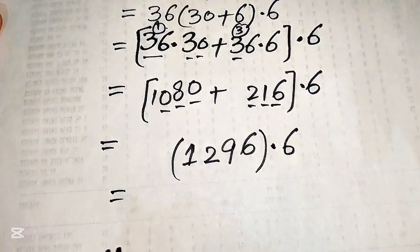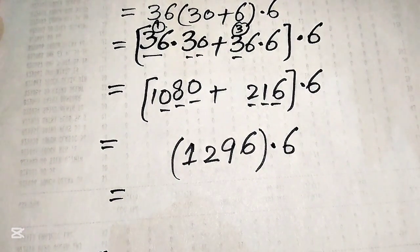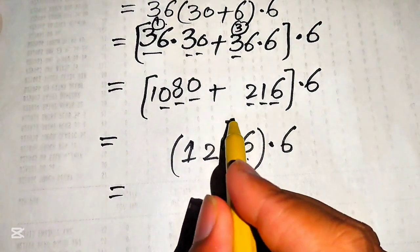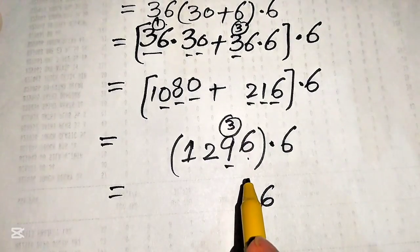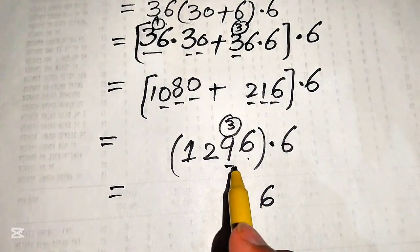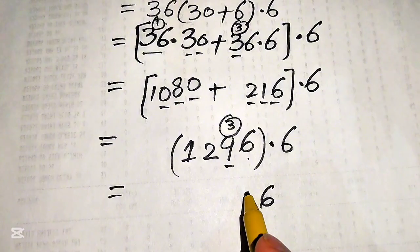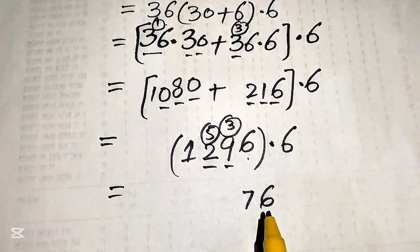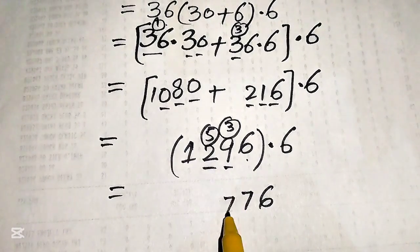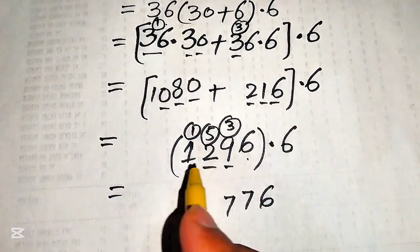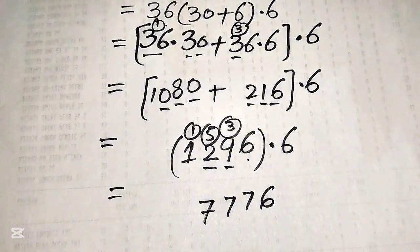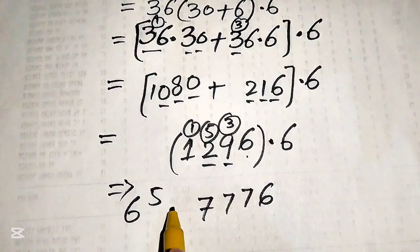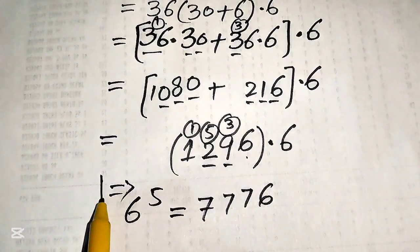We can multiply these two numbers directly in our mind without using the calculator. 6 times 6 becomes 36, write 6 carry 3; 6 and 9 are 54, plus 3 becomes 57, write 7 carry 5; 6 times 2 is 12, plus 5 becomes 17, write 7 carry 1; 6 times 1 is 6, plus 1 becomes 7. So 6 to the power of 5 equals 7776.